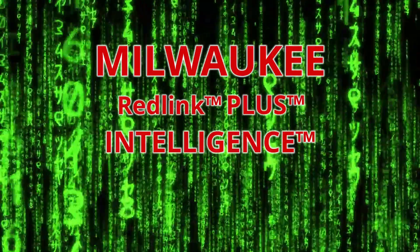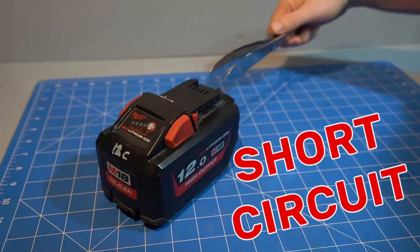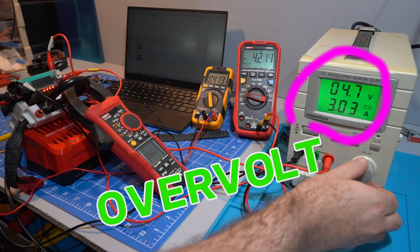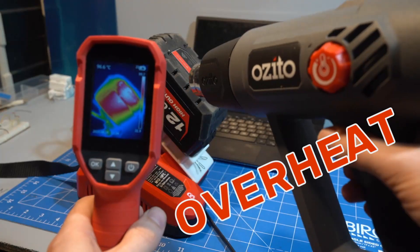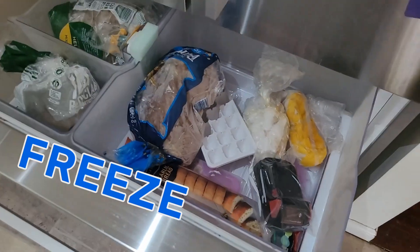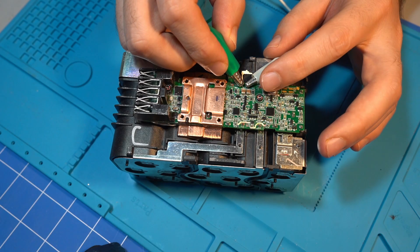In order to decipher the Milwaukee Redlink protocol, we're going to have to short circuit, overvolt, undervolt, overheat, freeze, and touch the battery in its special spot.